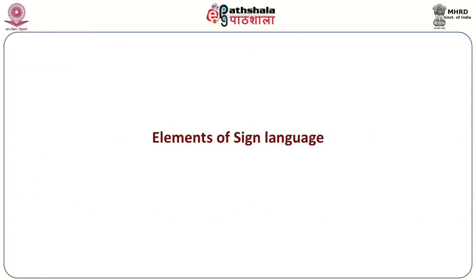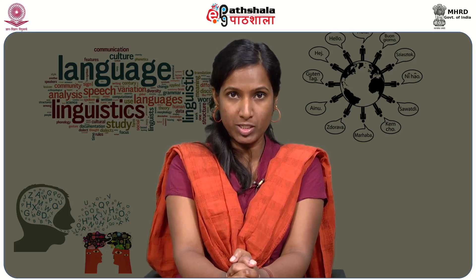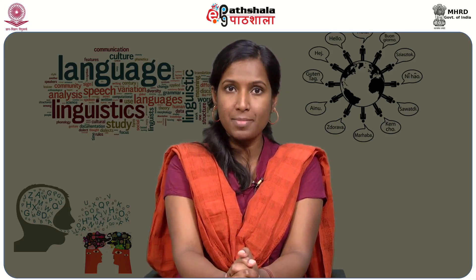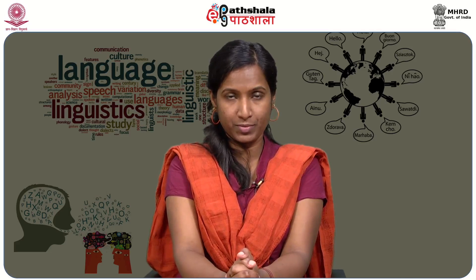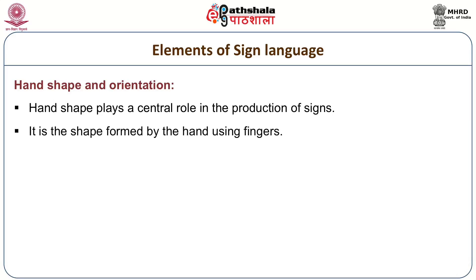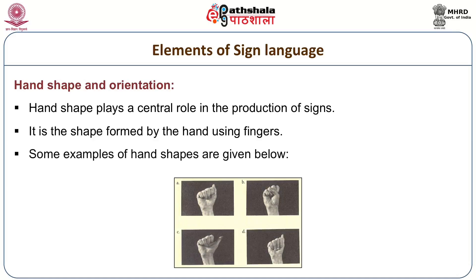Elements of sign language. Signs are the basic lexical units in sign language, comprised of both manual and non-manual signs. Manual signs are produced using hand shape, hand location, and hand movement. Hand shape plays a central role in the production of signs — it is the shape that the hand forms using fingers, such as a closed fist hand shape, V hand shape, L hand shape, and so on.